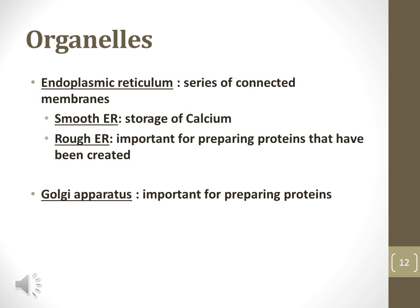Endoplasmic reticulum, abbreviated ER, describes a series of connected membranes in the cytoplasm of a cell. Ribosomes attached to the rough ER make it an important region of protein production. Smooth ER does not have ribosomes attached and is important for calcium storage, especially in skeletal muscle of animals, among other functions. Golgi apparatuses are smaller groups of connected membranes responsible for protein storage and packaging active proteins, which must be assembled into a specific tertiary or even quaternary structure to function properly.